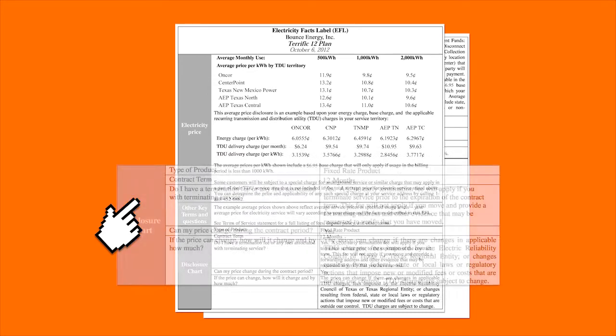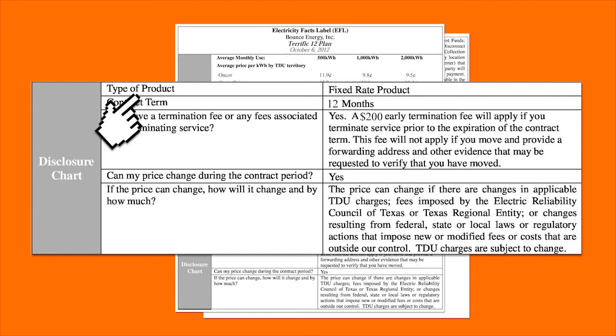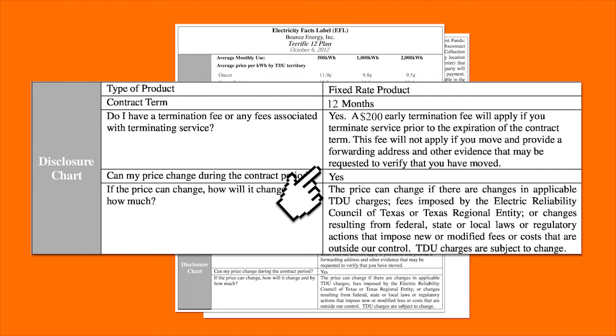The disclosure chart contains specific information about the plan. It will list the product type, whether it is a fixed or variable plan, contract length, cancellation fees, and price change terms.